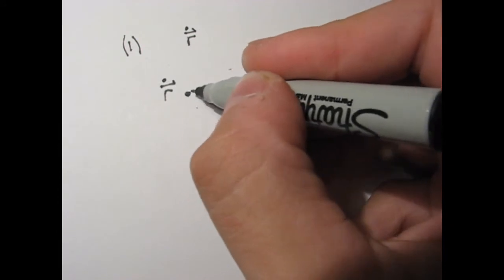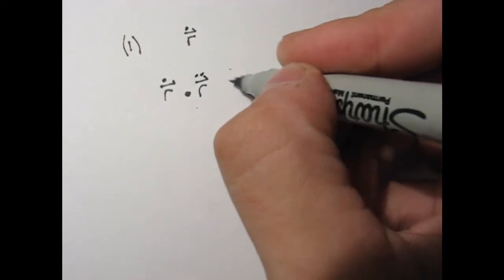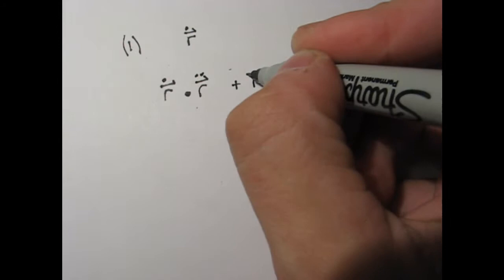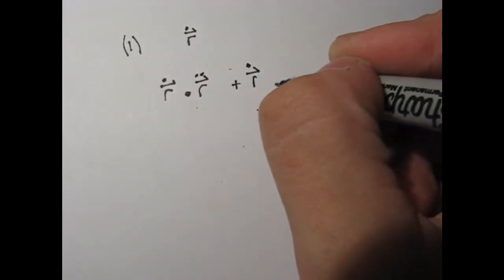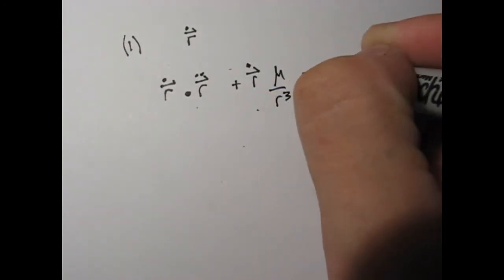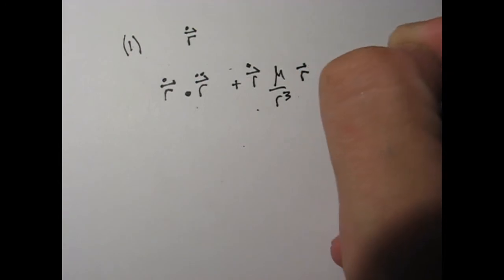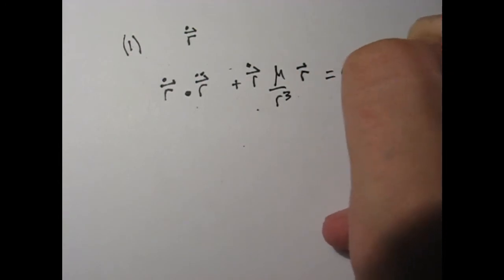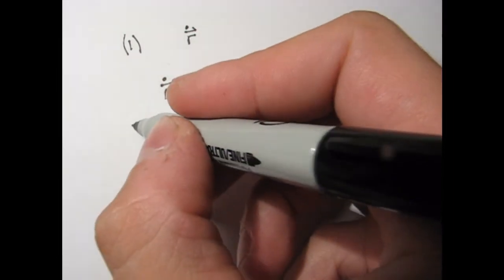So: R dot dot R double dot plus R dot mu over r cubed times R equals zero. That's step one.